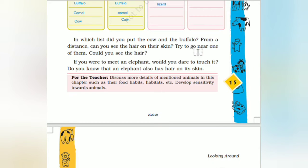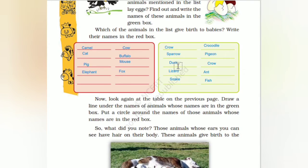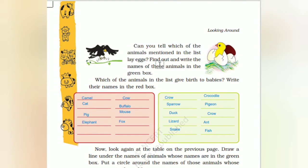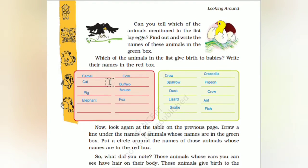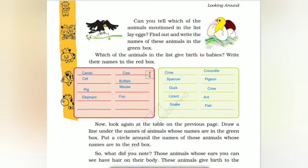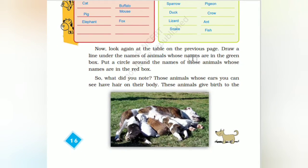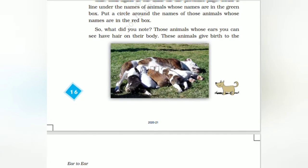In which list did you put the cow and the buffalo? If you were to meet an elephant, would you dare to touch it? Did you know the elephant has hair on its skin? Which of the animals in the list give birth to babies? Write the names in the red box. Babies are from: camel, cat, pig, elephant, crow, cow, buffalo, mouse, and fox. Which lay eggs? Crow, sparrow, duck, lizard, snake, crocodile, pigeon, and fish are animals which lay eggs. Now look again at the table — draw a line under the names of animals in the green box and put a circle around the names in the red box.